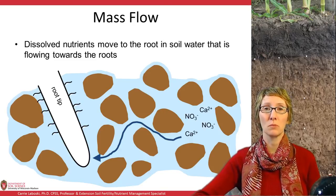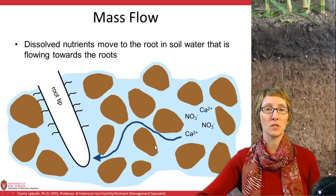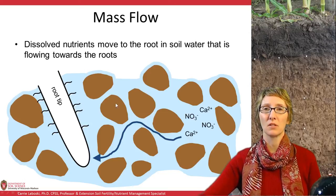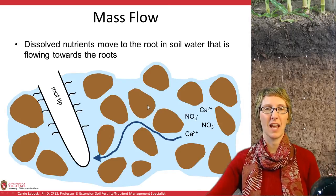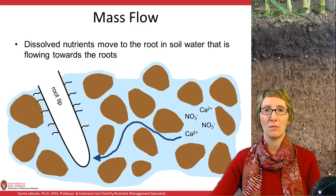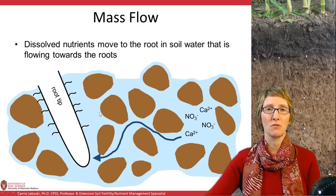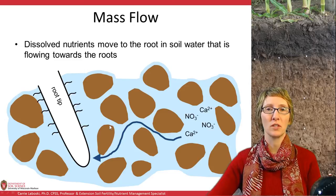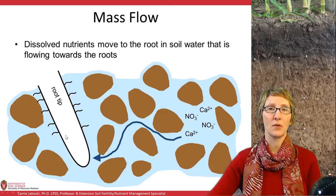We'll just go over the cartoon a little bit. Here we have our root tip, and these are the root hairs extending out from the root tip. We have the soil particles — spaced a bit apart as if looking at a high-powered microscope. The blue represents the soil solution. So we can see where the nutrients are held on the soil, they're in the soil solution, and how they're getting to the root.